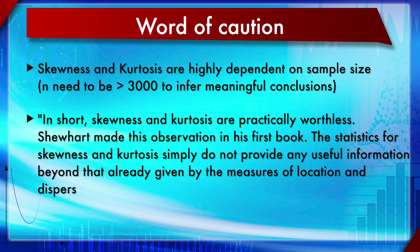A famous statistician stated that skewness and kurtosis are practically worthless — they do not provide any useful information beyond what is already given by the measures of location and dispersion. The best option is simply to draw a histogram and interpret whether the data is normal or not. A better formal approach is to use a normality test such as the Omnibus K² normality test.